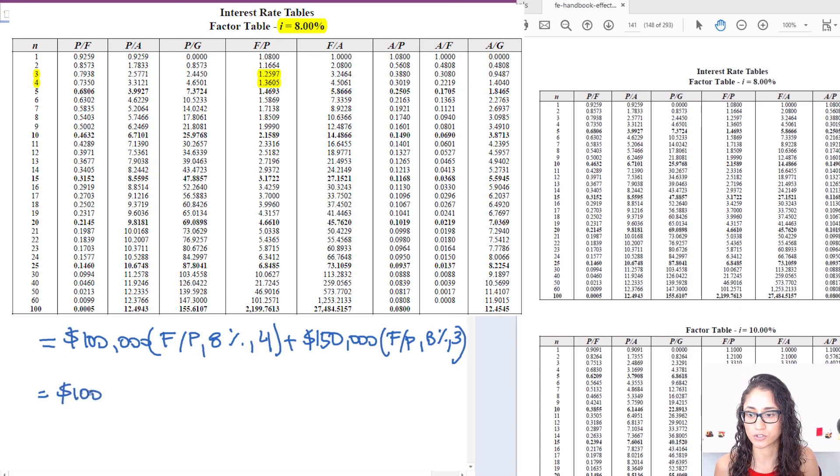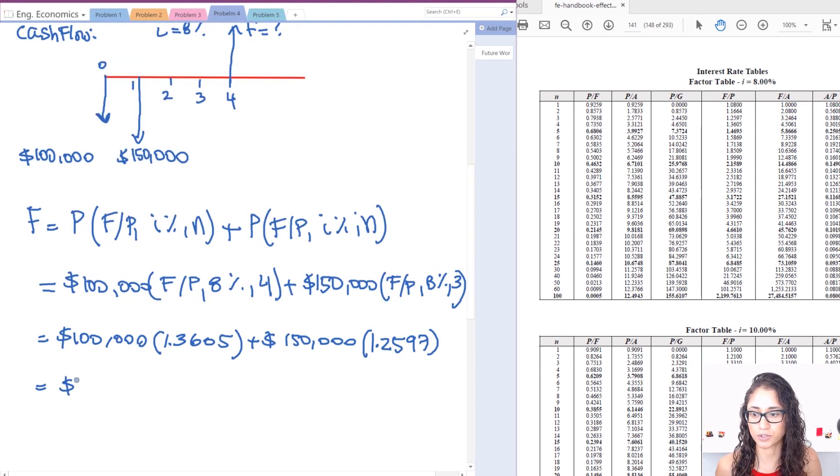So I have $100,000 times, for four years, F to P is equal to 1.3605, plus I have $150,000 times, now for three years we have 1.2597. So this is going to give you an answer of $325,000, and that's answer B.